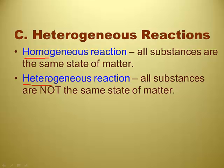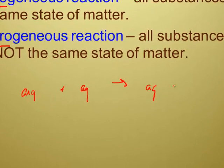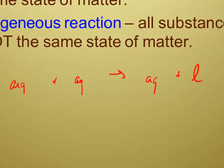What if I had a reaction like aqueous plus aqueous yields aqueous plus liquid? That's a heterogeneous reaction. Aqueous and liquid really aren't the same thing. So equilibrium is the exact balancing of two processes, one of which is the opposite of the other — kind of like being on a teeter-totter.